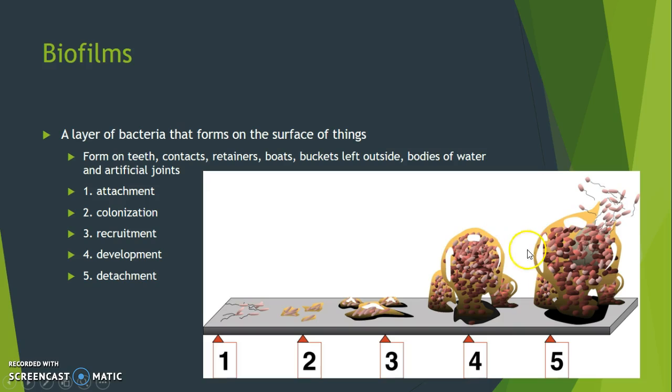And so they develop to where they have these channels that stuff can flow through and replenish, and they get very elaborate. If you ever look at a biofilm that's formed on something outside, they can get pretty big and elaborate for recruitment. But then they eventually reach a certain point where they burst and all these bacteria break open and can go attach to other things. It's a cycle where they can attach and create more biofilms, and so biofilms can just exponentiate.